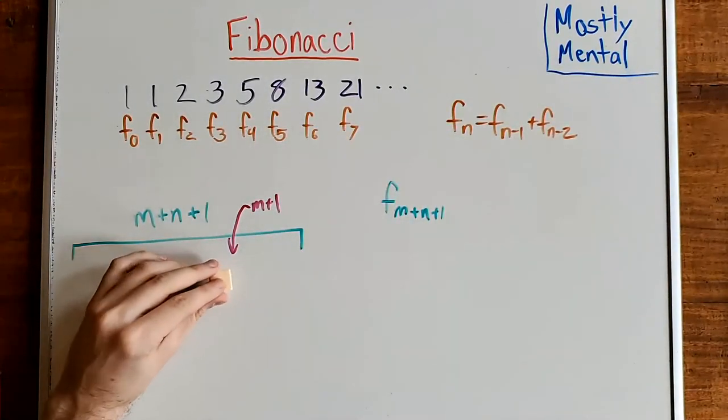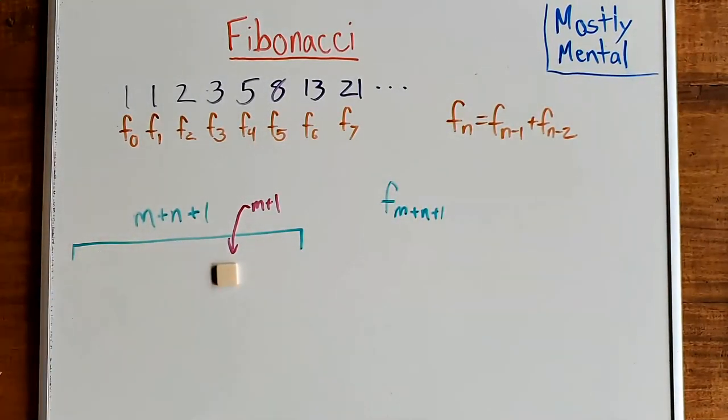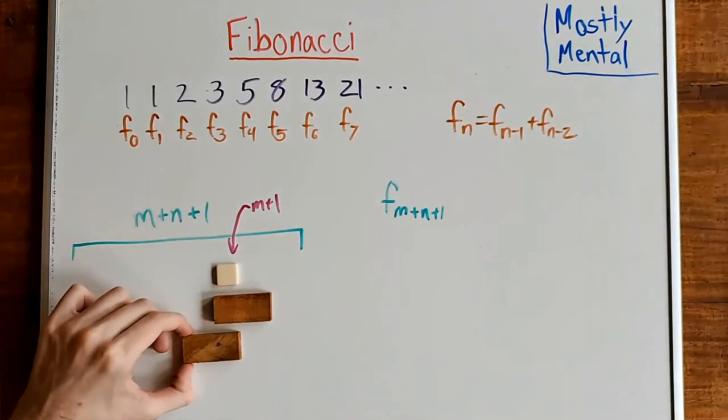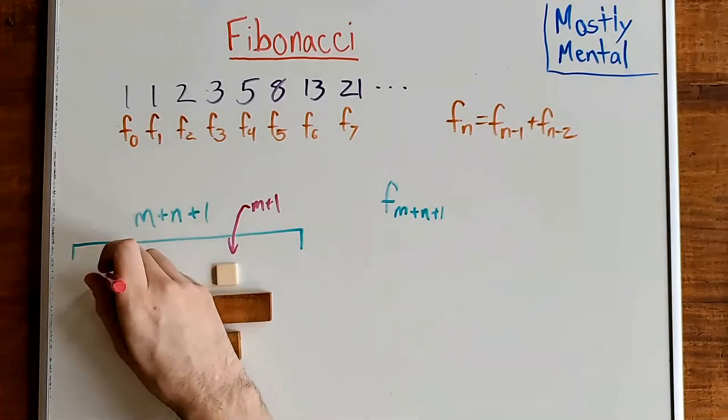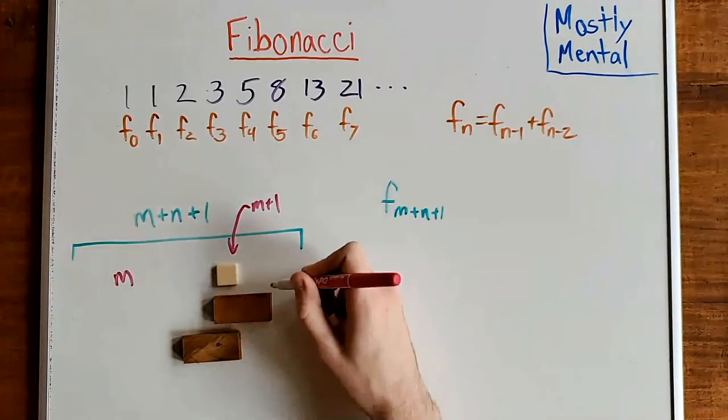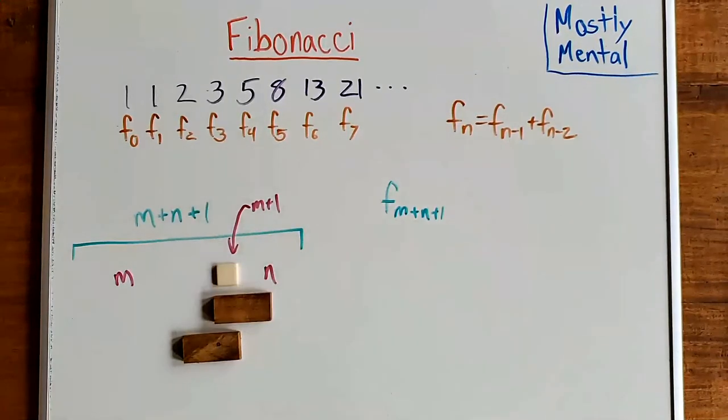Well, there are three options. Either it's a square, it's the first half of a domino, or it's the second half of a domino. If it's a square, there's m spaces to the left to tile and n to the right. If it's the first half of a domino, it's m to the left and n minus 1 to the right.